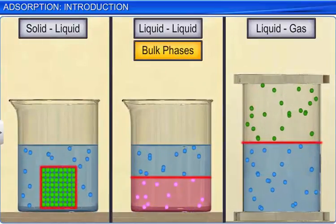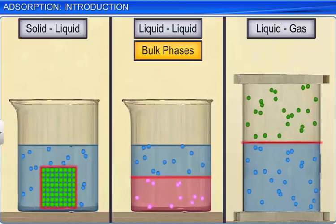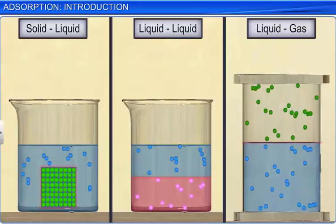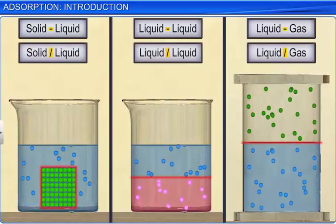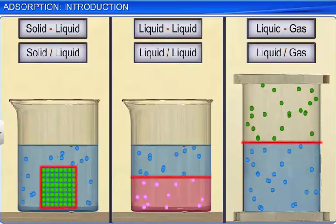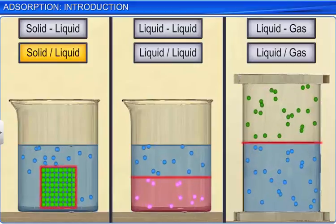The two bulk phases refer to the pure compounds or solutions involved in the reaction. The interface is represented by putting a hyphen or slash between the two bulk phases involved, for example, solid-liquid or solid-slash-liquid.